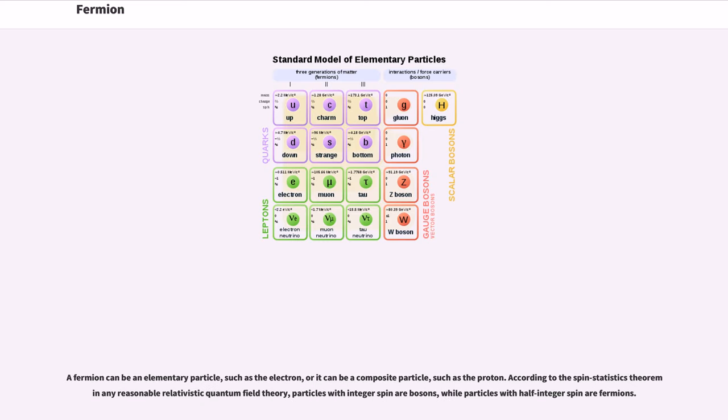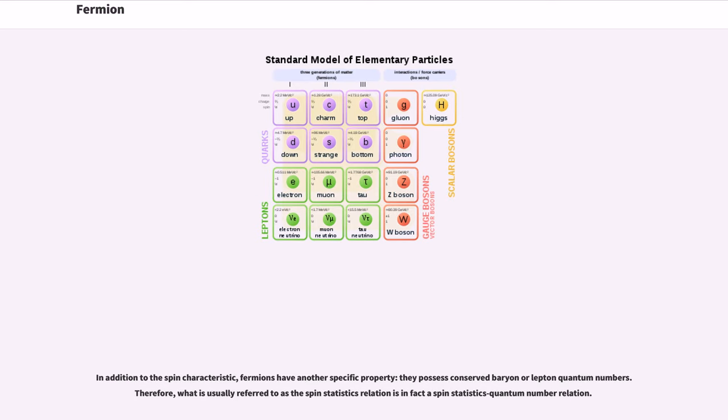A fermion can be an elementary particle, such as the electron, or it can be a composite particle, such as the proton. According to the spin-statistics theorem in any reasonable relativistic quantum field theory, particles with integer spin are bosons, while particles with half-integer spin are fermions. In addition to spin, fermions possess conserved baryon or lepton quantum numbers. Therefore, what is usually referred to as the spin-statistics relation is in fact a spin-statistics quantum number relation.